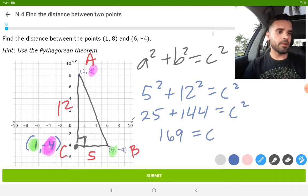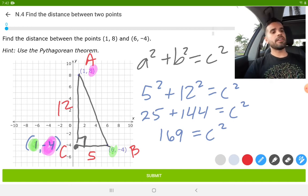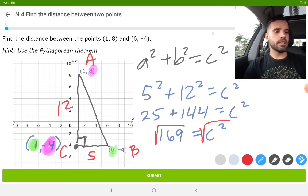169 is equal to C squared. Now, in order to get rid of that exponent of two, we're going to find the square root of both sides. Once we do that, these two cancel out. And all we need to do now is find the square root of 169, which happens to be 13. So 13 is equal to C.